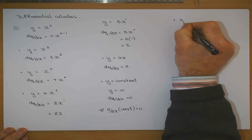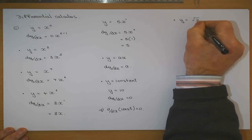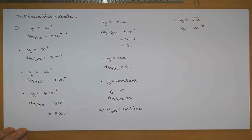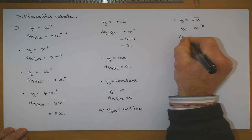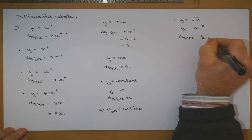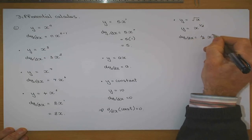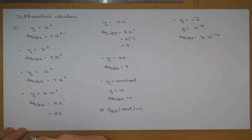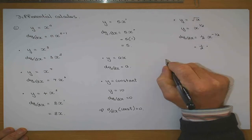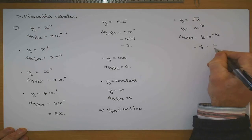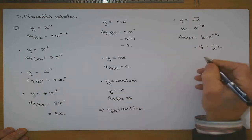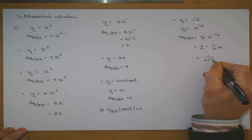Now, if y was equal to the square root of x, that would mean y is equal to x to the power of a half. Then dy/dx would become one half times x to the power of minus a half, because the power reduces by 1. That is one half times x to the minus a half, which means 1 over 2 root x.